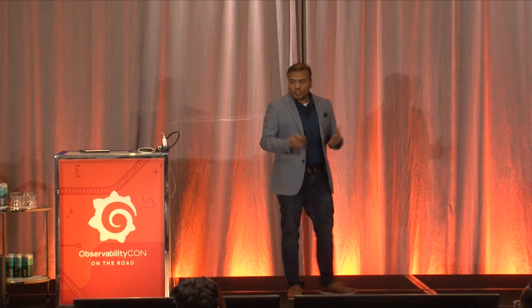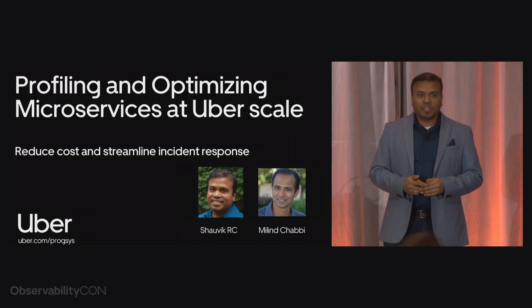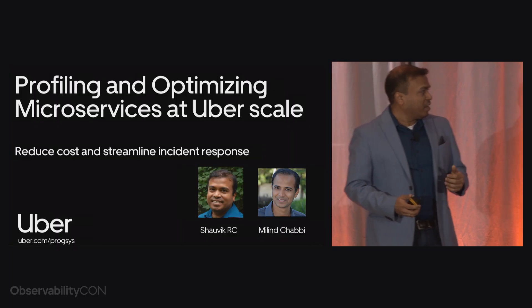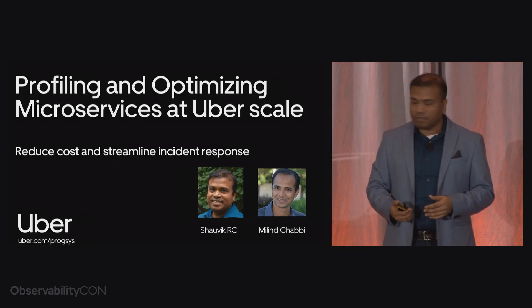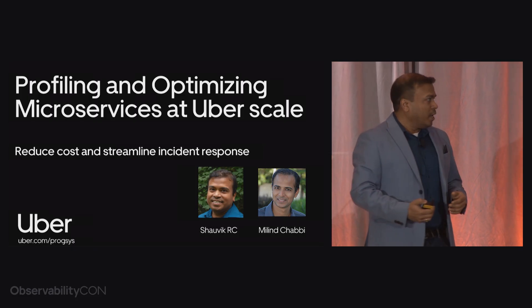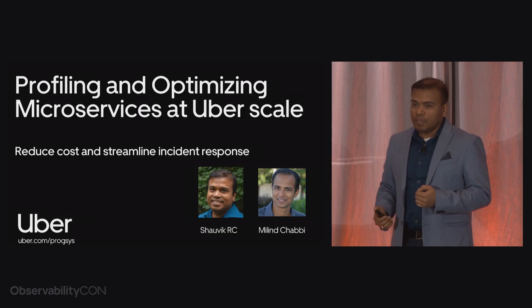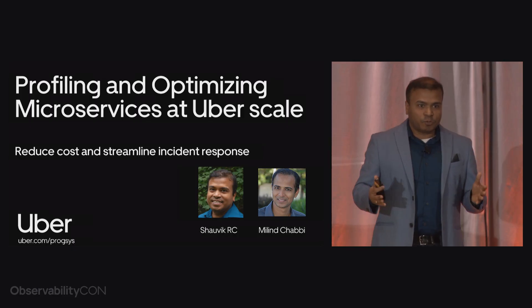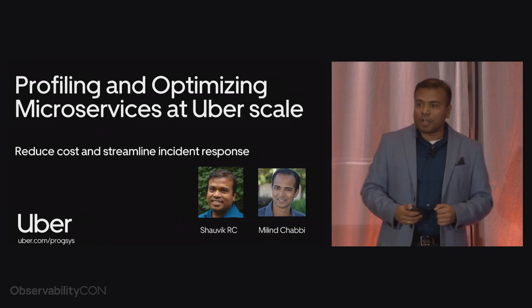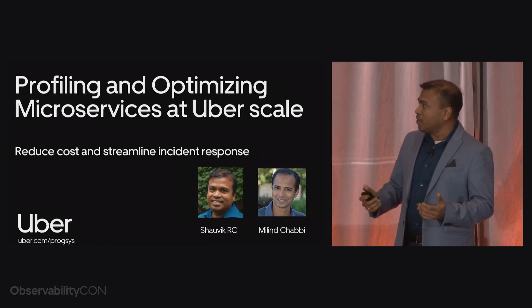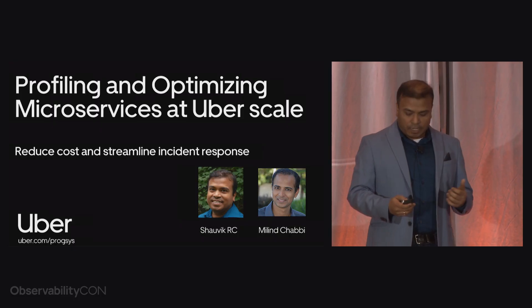Hi, everyone. My name is Shavik Rai Chaudhary. I'm an engineering manager in Uber's platform engineering, and I'll be joined by my colleague Milan Chubby, who's a senior staff engineer. Together, we lead Uber's programming systems group, which is an R&D group that helps Uber stay at the cutting edge of innovation. Today, we are here to talk about our profiling journey and how we are optimizing microservices at Uber scale.